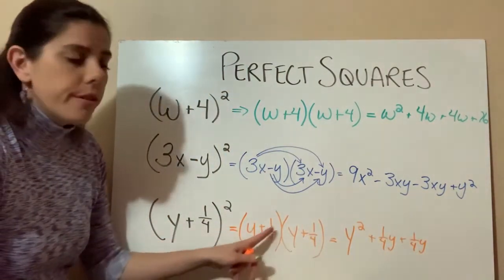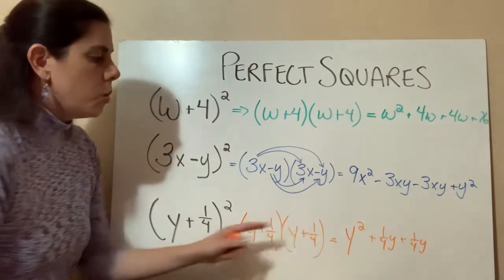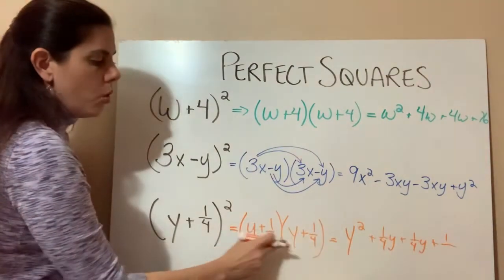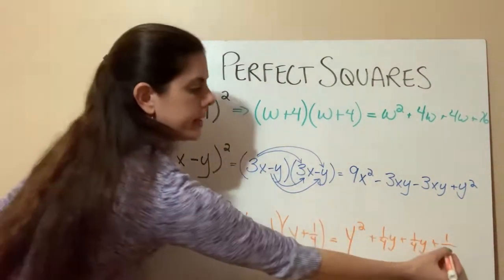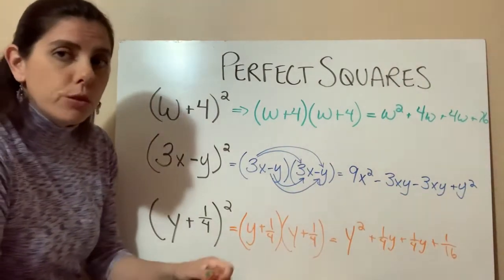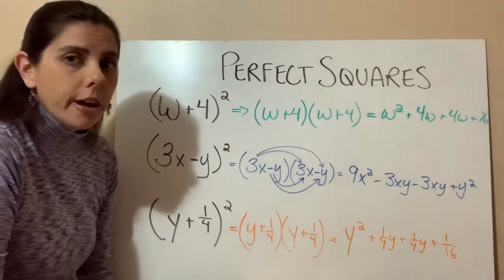And then one-fourth times one-fourth for our last one. So one times one is one, and four times four is 16. So don't let the fractions fool you too much, because remember, it's all multiplication, and multiplying fractions is very simple.